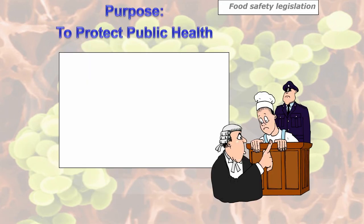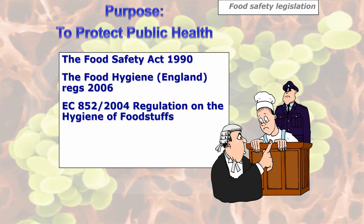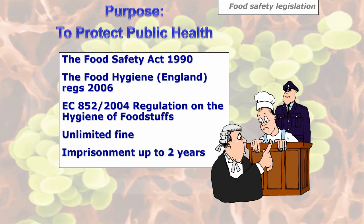The last few slides cover food safety legislation. The purpose of food safety legislation is to protect public health — another likely exam question. We've got various acts: the Food Safety Act, the Food Hygiene England Regulations 2006, and the EC 852/2004 Regulation on the Hygiene of Foodstuffs. Penalties can be anything up to an unlimited fine or imprisonment of up to two years. Under the Manslaughter Act, if found guilty of killing somebody through food poisoning, the penalties could be up to seven years.